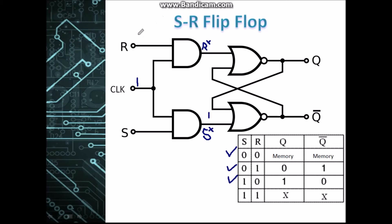The last condition: when R is 1 and S is 1, a 1 AND 1 gives us 1 at S*, and a 1 AND 1 gives us 1 at R*. When a 1 and a 1 are fed into the SR latch, we get the invalid state. Stay tuned for the next video, which discusses more types of popular flip-flops.